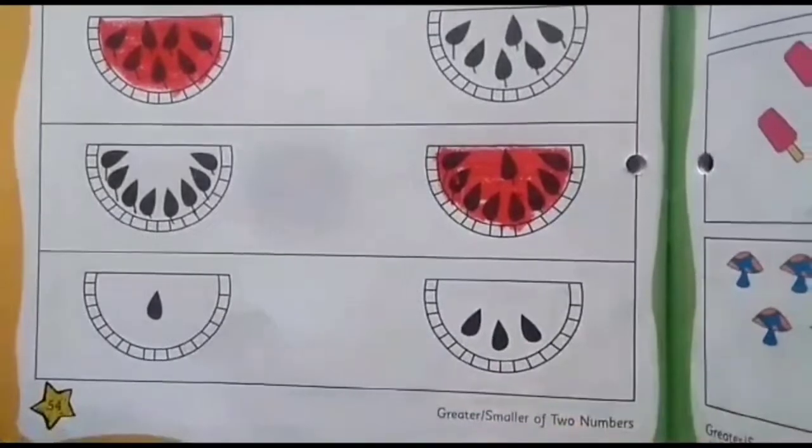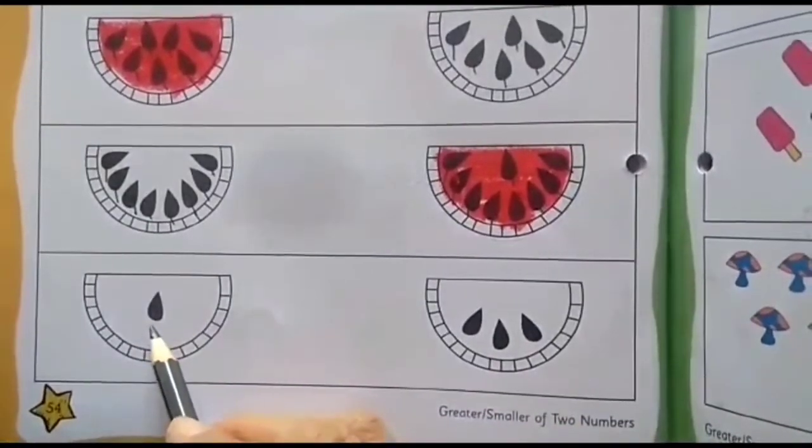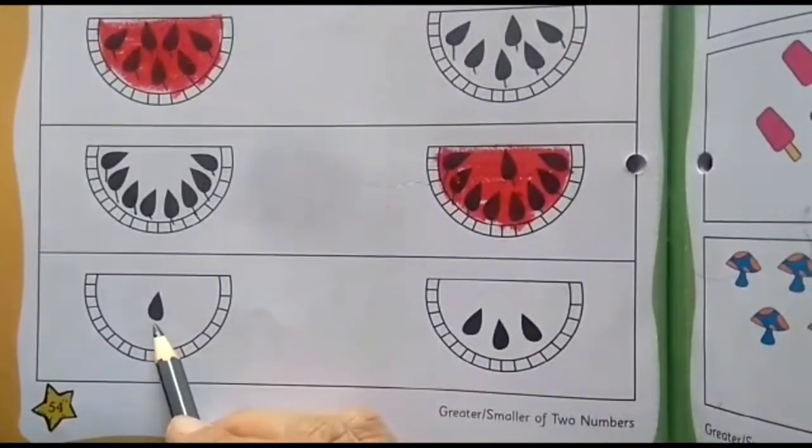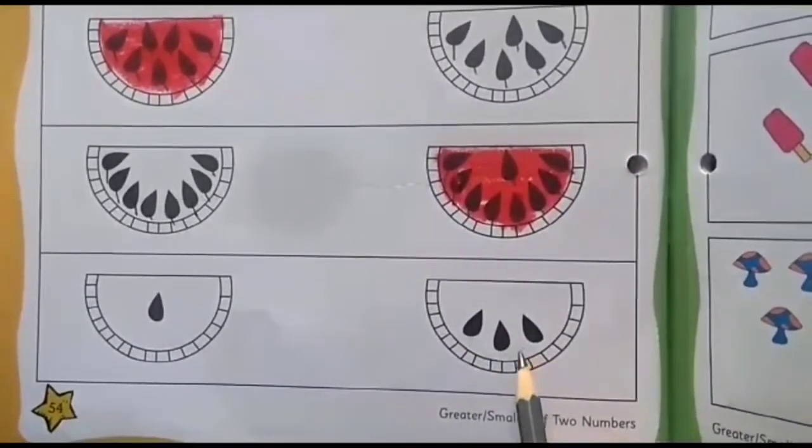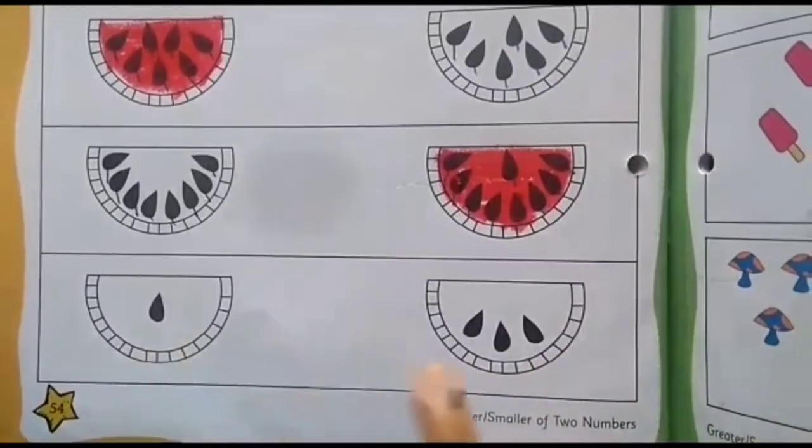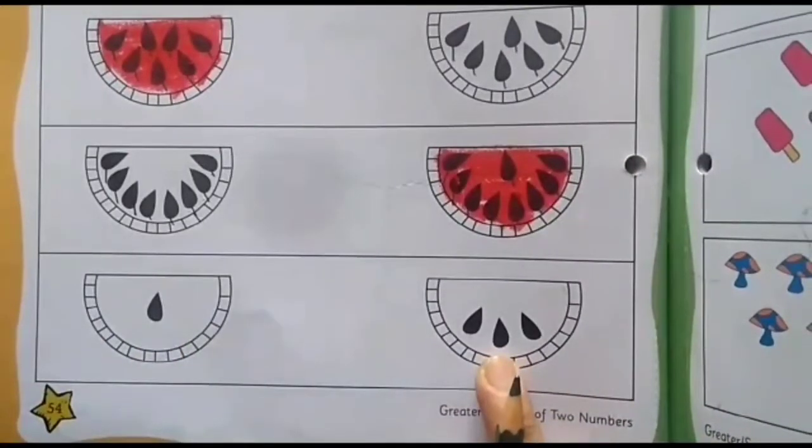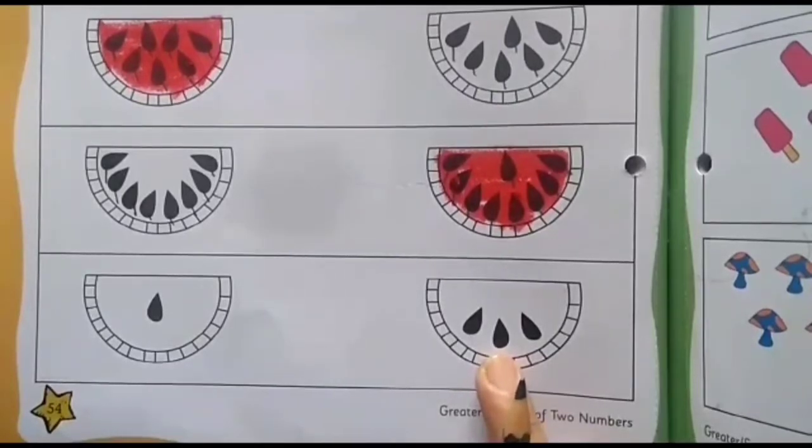Now let's come to the last one. How many seeds can you see here? Only 1 seed. And how many seeds here? 1, 2 and 3. So where more number of seeds are there? Here or here? Your answer is yes. You are right. 3 is more than 1. Right? So this watermelon we need to color with red.